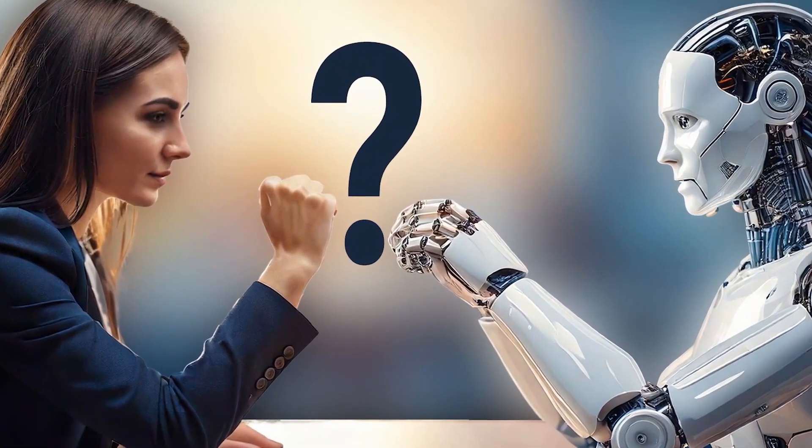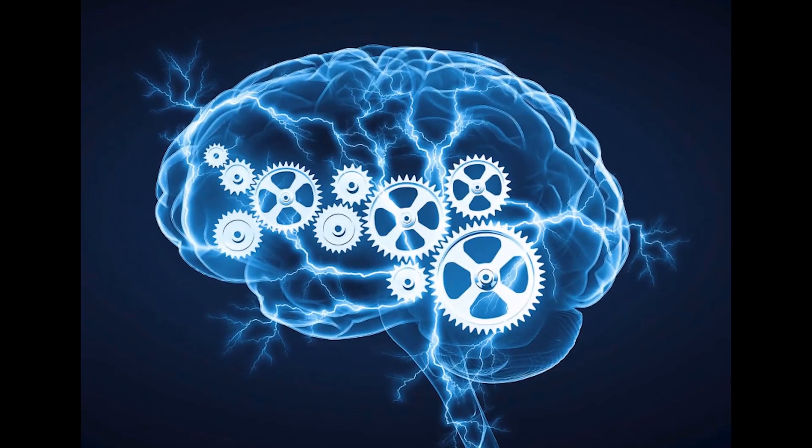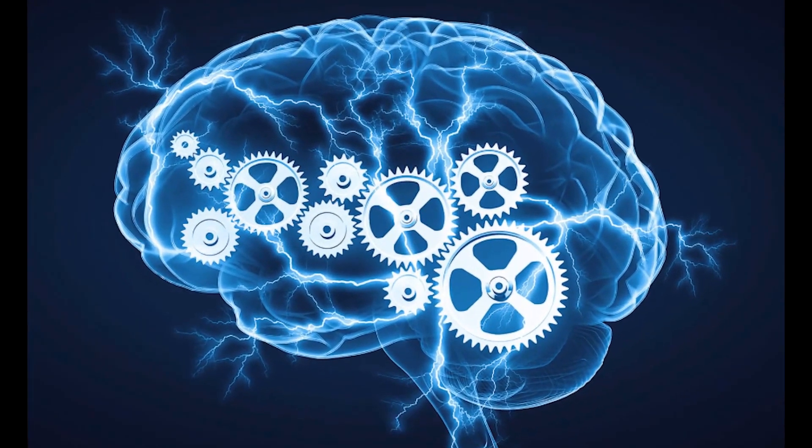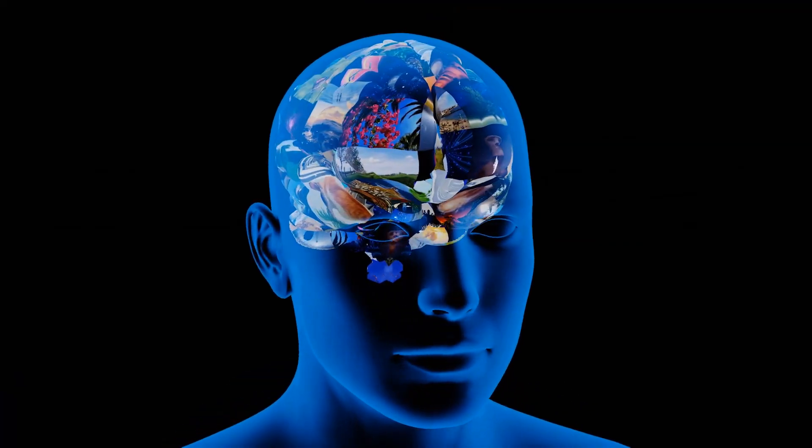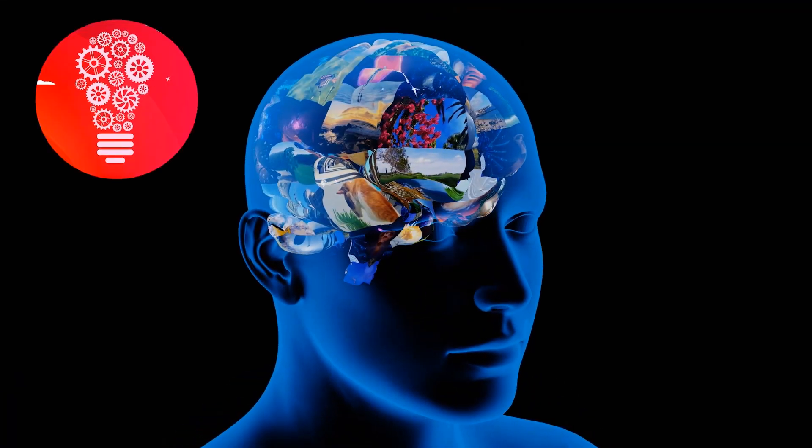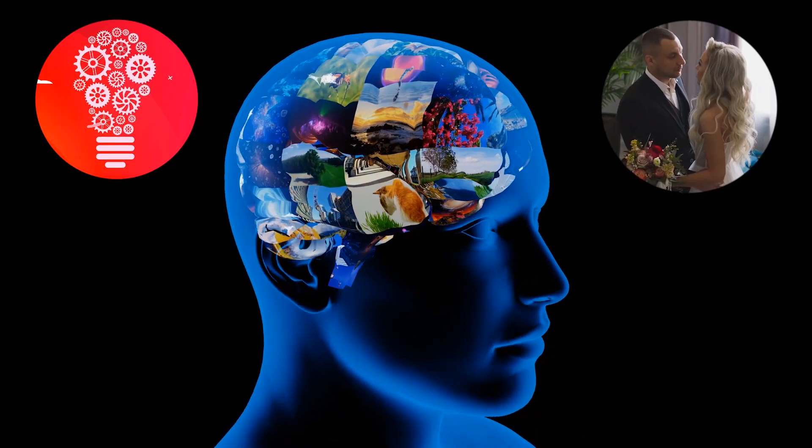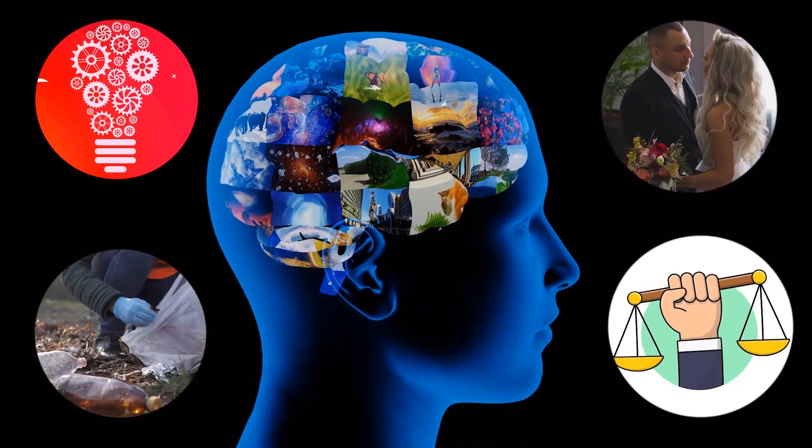We'll break down the core aspects of intelligence: processing power, creativity, emotional understanding, learning adaptability, and decision-making. From AI-driven innovations to the unique brilliance of human thought, this is the ultimate face-off between artificial and human intelligence.